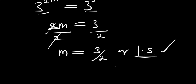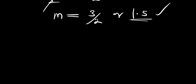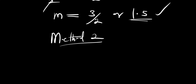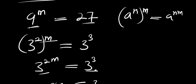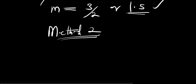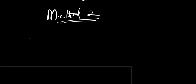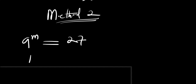Now let me introduce Method 2. Recall the problem: we have 9 power m equals 27. In this second method we introduce logarithms — we take log of 9 power m equals log of 27.